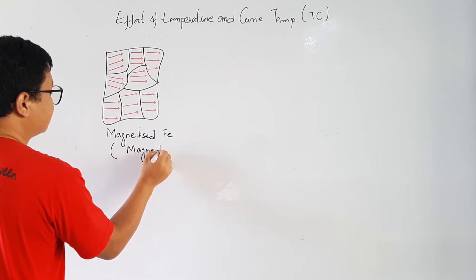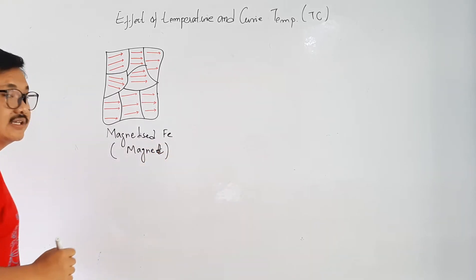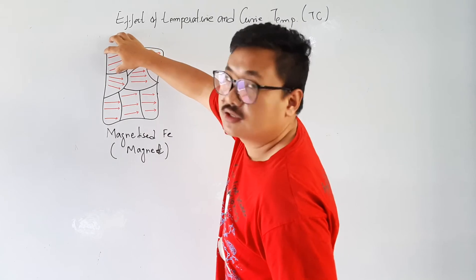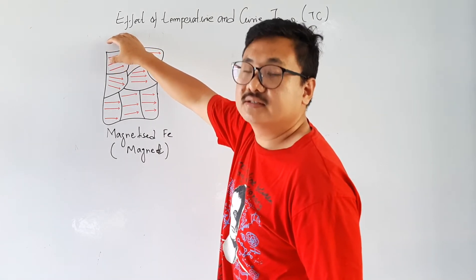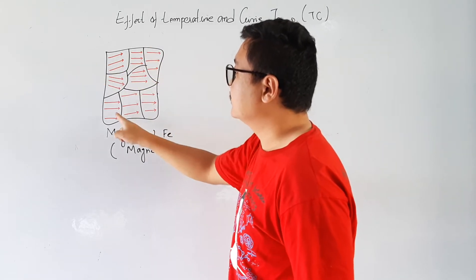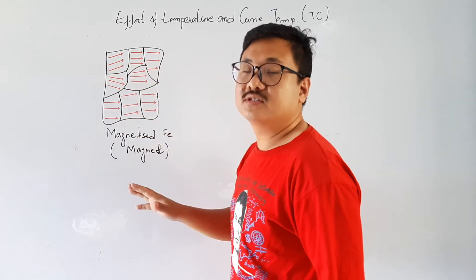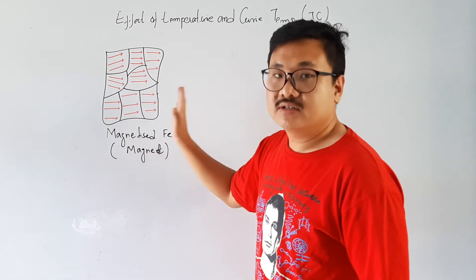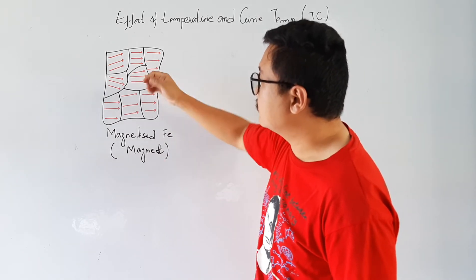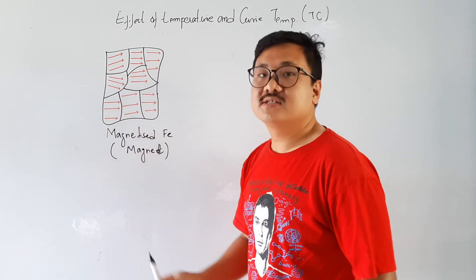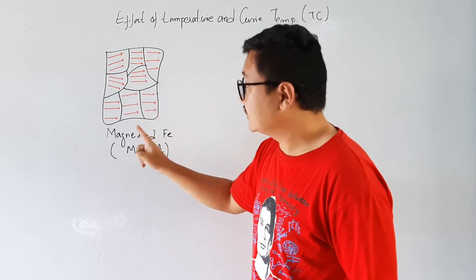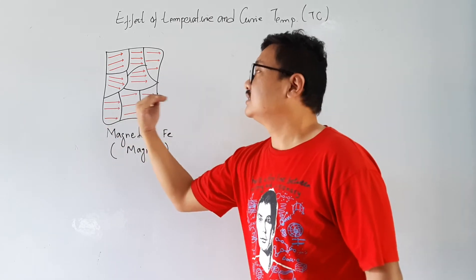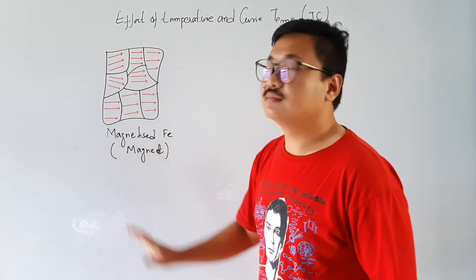We learned in the last lecture that for a magnet and a magnetized ferromagnetic material, all the dipole movements of small regions — which we defined as domains — will point in the same direction. Thus it will possess magnetism and become a magnet. All the arrows are in the same direction, referring to the magnetic movements of the electrons being aligned, giving a net magnetic field.